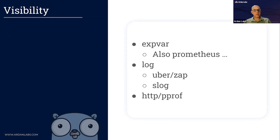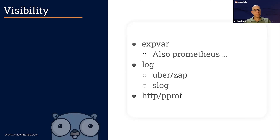You can pass a single request ID throughout the handler chain using an established mechanism called context. There are many thoughts about discoverability and visibility of code running in production. Apart from the built-in logger, which is bare bones, there are external loggers. One popular one is Zap by Uber — Uber writes a lot of Go and has a lot of open-source Go code. There is also an experimental slog package for structured logging developed by the Go team, set to enter the standard library at Go 1.21.